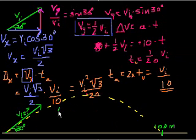We say 100 is equal to v i squared times the square root of 3 over 20. And then we can multiply both sides times the inverse of this, right? We can multiply both sides by 20 and divide by the square root of 3.